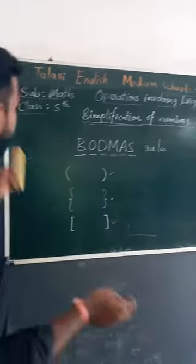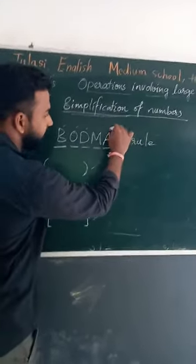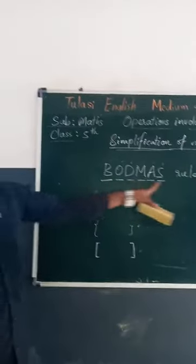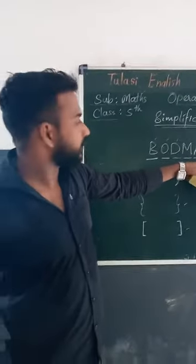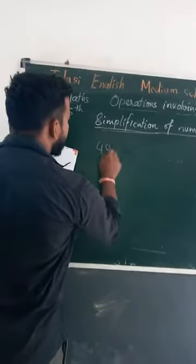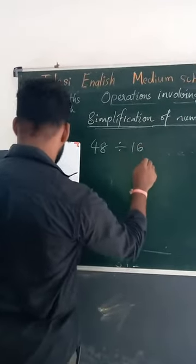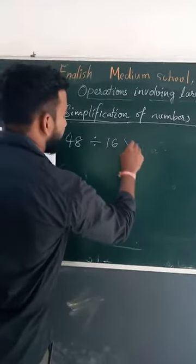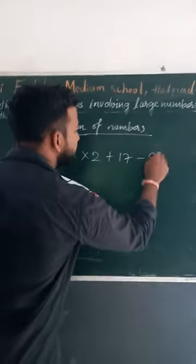Let me take one problem. This is BODMAS: B for Bracket, O for Of, D for Division, M for Multiplication, A for Addition, S for Subtraction. Keep this word in your mind. According to this rule, we have to simplify: 48 divided by 16, into 2, plus 17, minus 9.